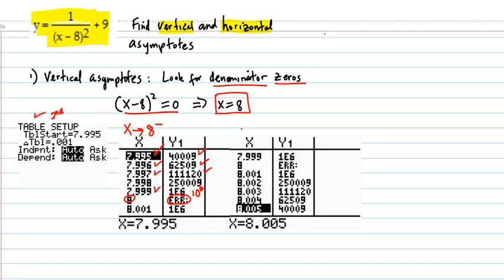Then you set up a table. I just scrolled down on the table. And x was going to 8 from the right going up this way. So at 8.005, you were at 40,009. And so forth as it got up to 8.001, the y value was 1e6, which is 1 times 10 to the 6th. So it was 1 million again. So coming from the right down to 8 or coming from the left up to 8, both resulted in the y values going to plus infinity.